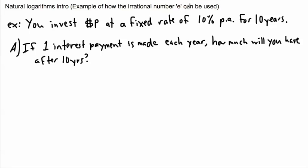I'd like to show you one example using investment. Let's say that you invest P dollars — that's your principal, the initial amount you invest. It's at a fixed rate, so let's say you're earning interest of 10% per annum, in other words per year, for 10 years. This is the key thing that's not going to change in this example.